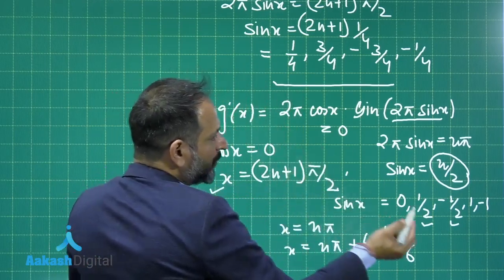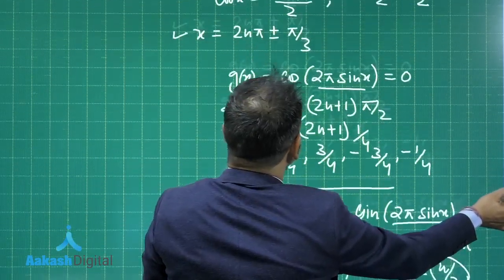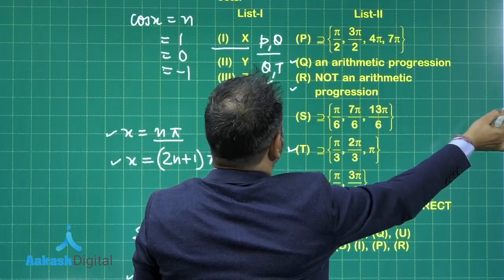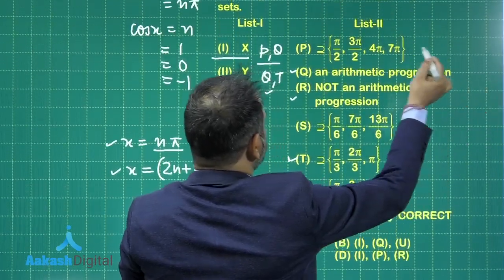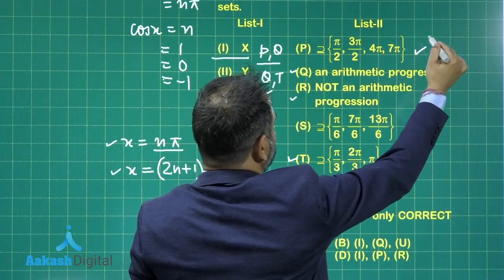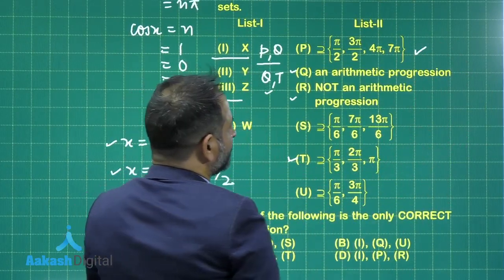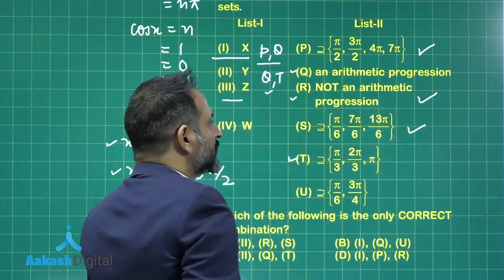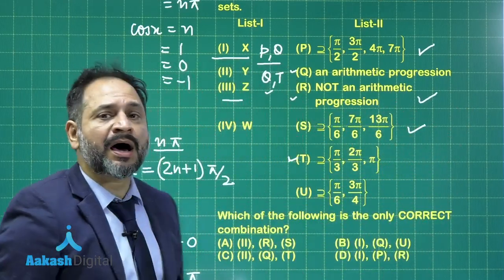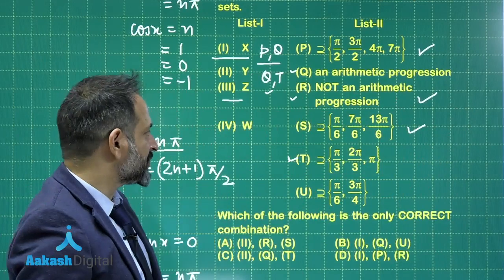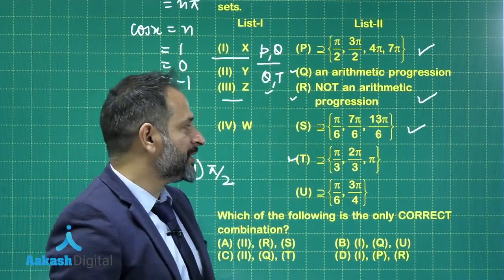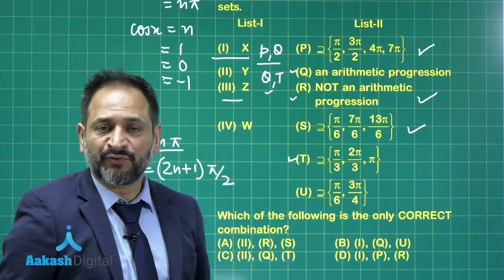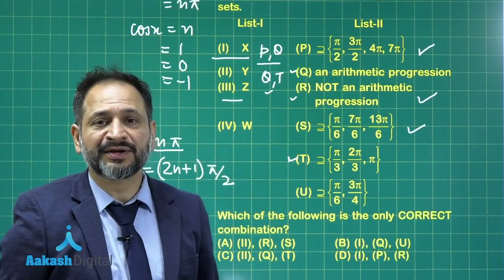If you calculate all the values, the correct options for W are P, R, and S. The values are not in arithmetic progression. So these are the three correct options for option W. Let us move to the next problem.